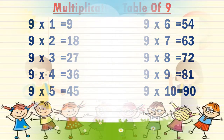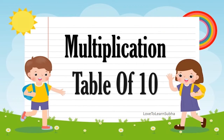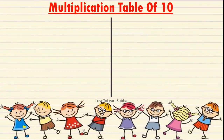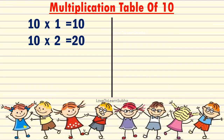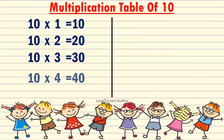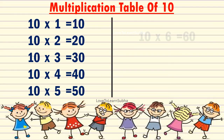Multiplication table of 10. 10 1's are 10, 10 2's are 20, 10 3's are 30, 10 4's are 40, 10 5's are 50.